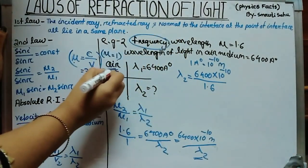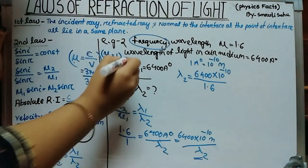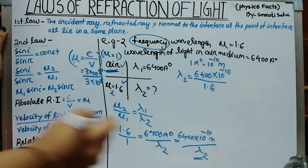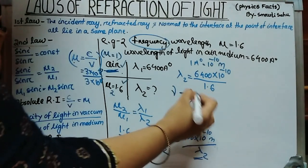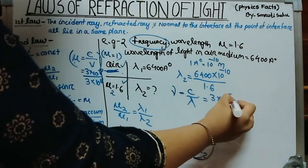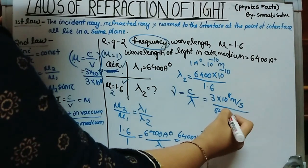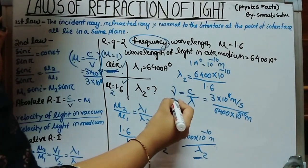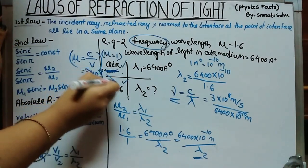The frequency is the same for the first medium and the second medium — there is no change in frequency. So we determine the frequency in the first medium using nu = C/lambda, where C = 3 × 10⁸ m/s and lambda = 6400 Å = 6400 × 10⁻¹⁰ m. Simplify to determine the frequency, which is also the frequency in the second medium.